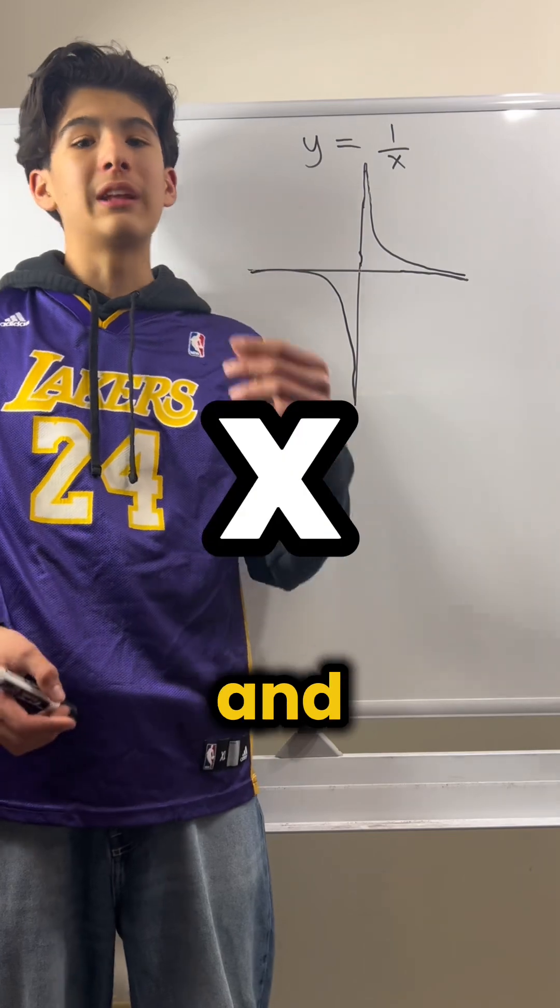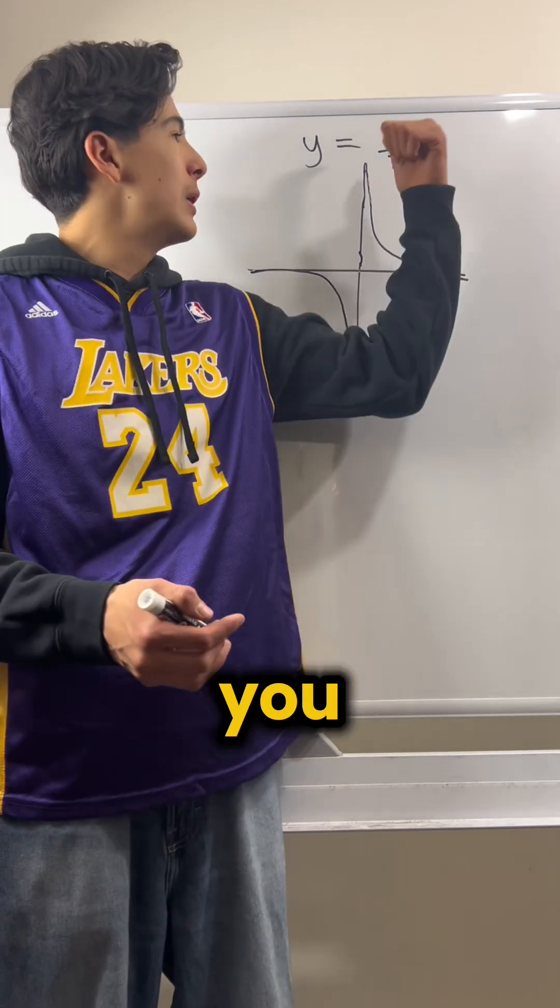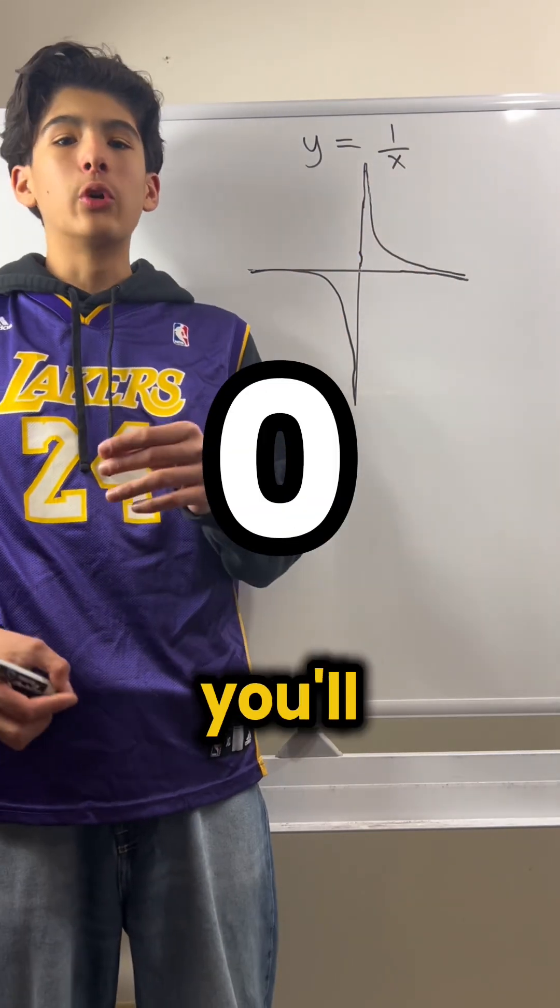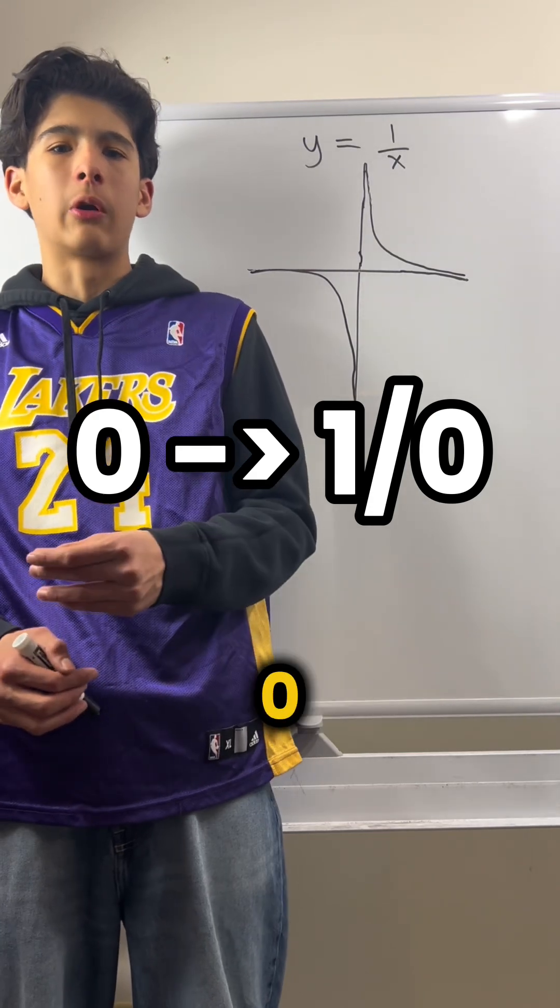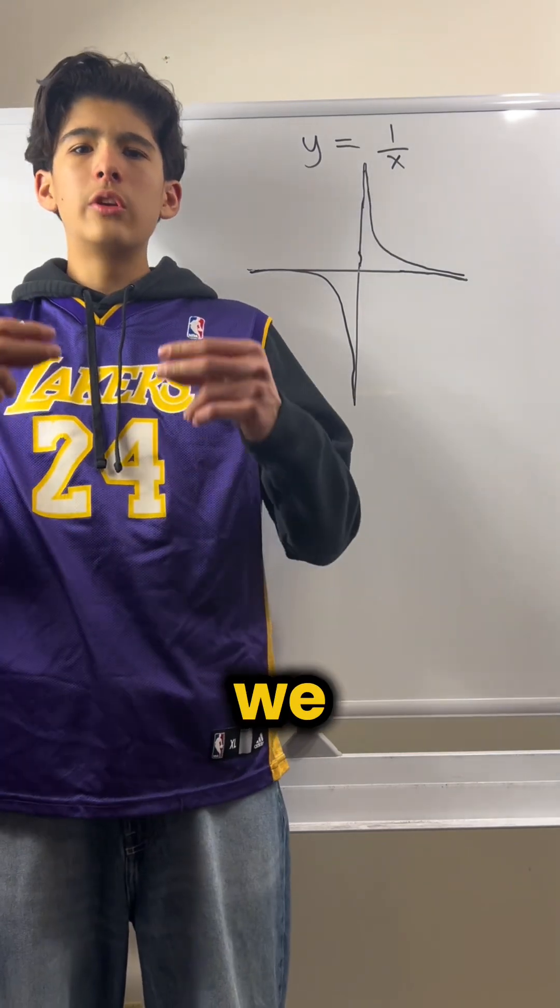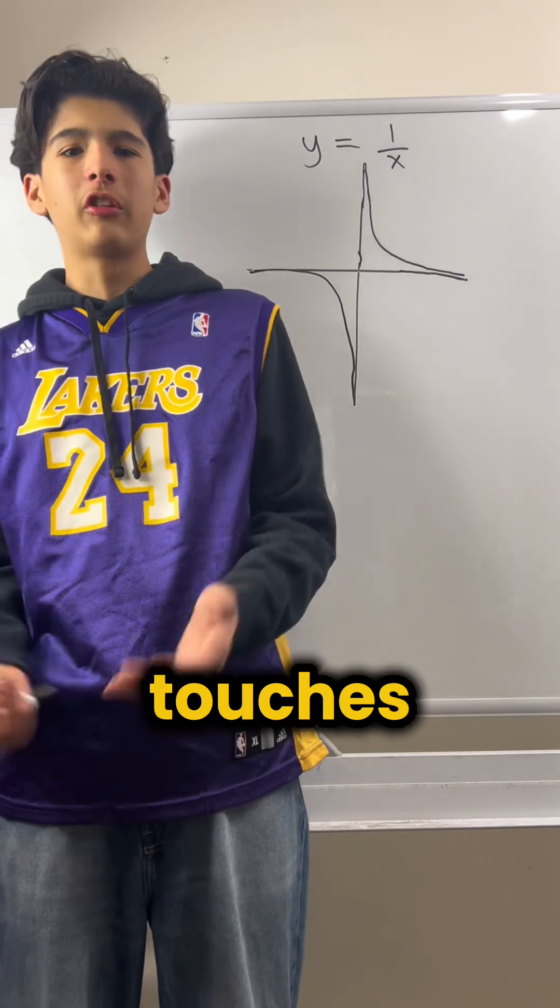Well, this is a function. It takes the input and gives you an output. So if you input zero for x, then you'll get an undefined value for y, because one over zero is undefined. So we know that this graph never touches the y-axis.